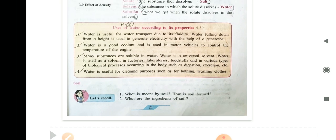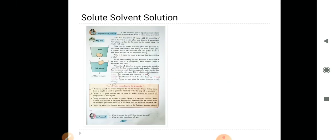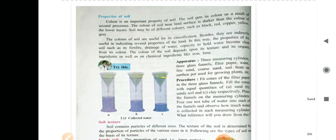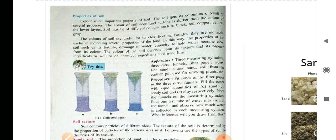Now let us move on to the next slide. We shall study the properties of soil. Colour is an important property of soil. The soil gets its colour as a result of several processes. The colour of the soil near the land surface is darker than the colour of the lower layers. Soil may be of different colours such as black, red, copper, yellow, grey.